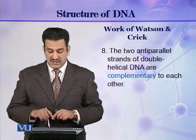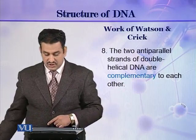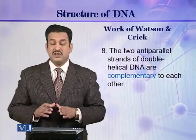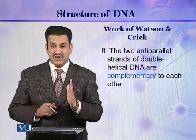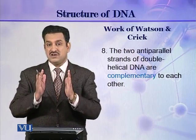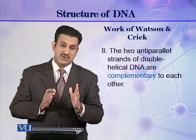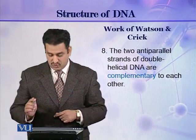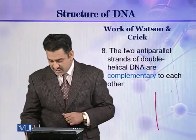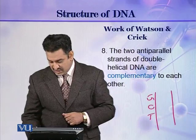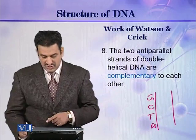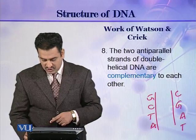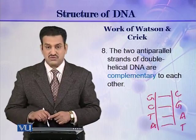Finally, they also described that the two anti-parallel strands are complementary to each other. This means if A is present in one strand, T will be present in the other strand, and if G is present in one strand, C will be present in the other strand. For example, one strand may read G, C, T, A, and the other strand will be C, G, A, T. This is called complementary base pairing.